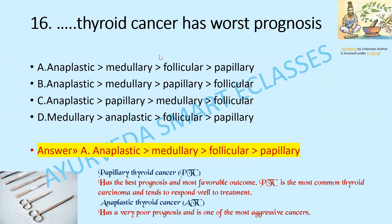Among four types of thyroid cancer, which has the worst prognosis? Anaplastic has the very poorest prognosis, then medullary, then follicular, then papillary. Papillary thyroid cancer has the best prognosis and most favorable outcome, responding well to treatment. Anaplastic thyroid cancer has very poor prognosis and is one of the most aggressive cancers.